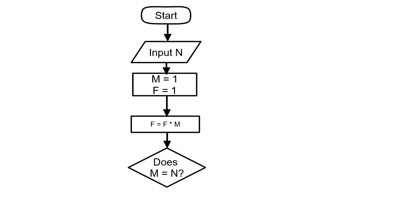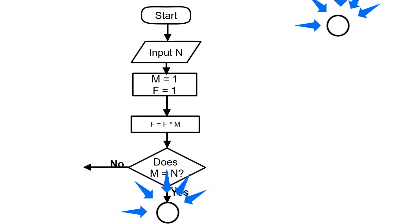All we have to do is store f times m in the memory location of f. The next thing is to make a decision: is m equal to n? If m is equal to n, something will happen; if not, another thing will also happen.